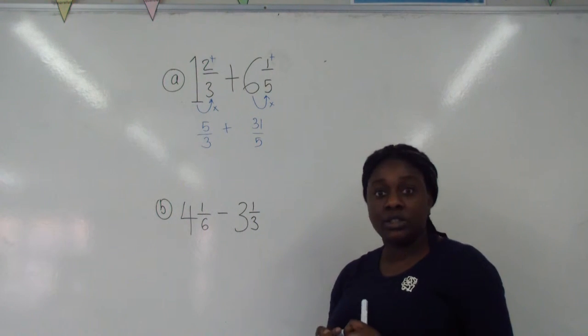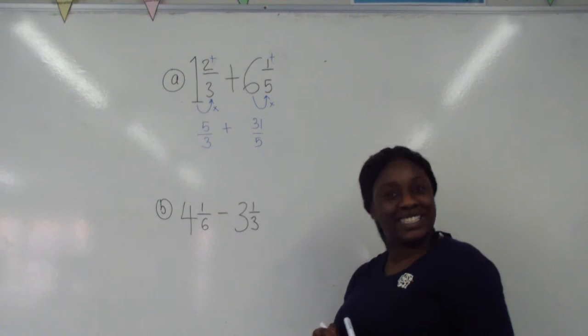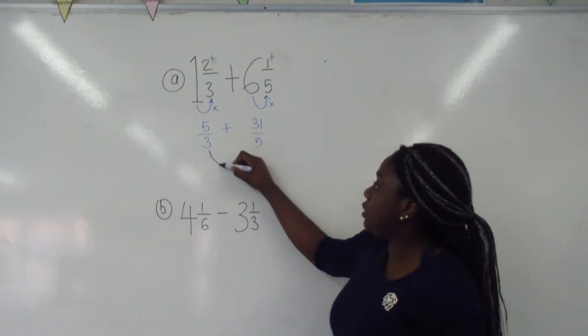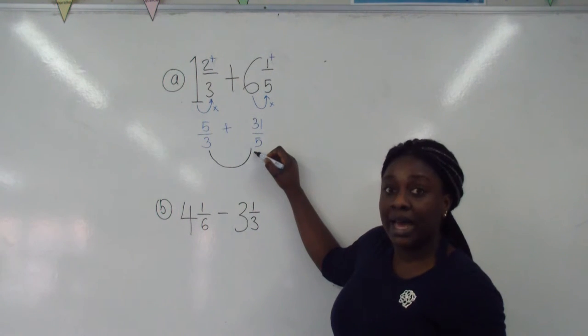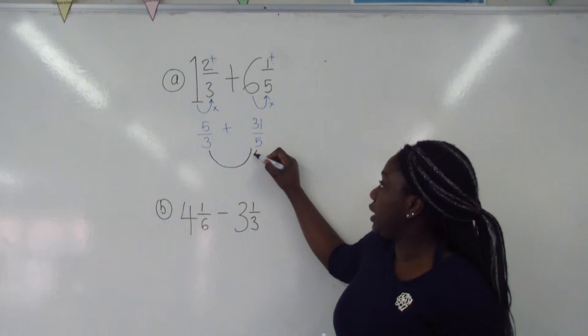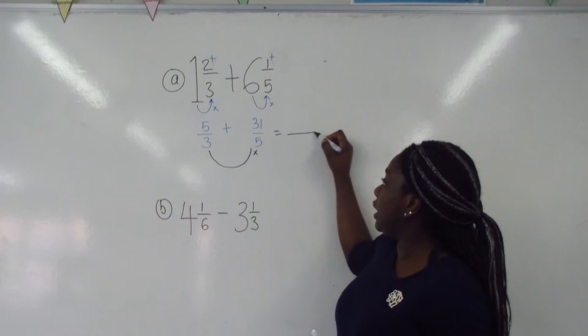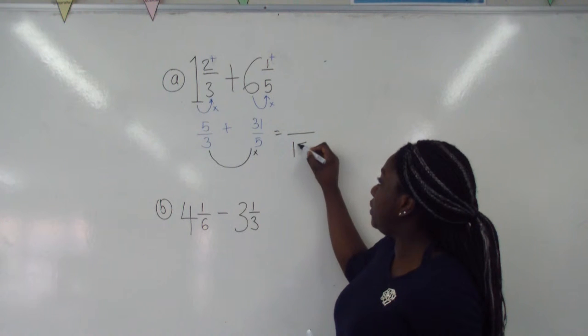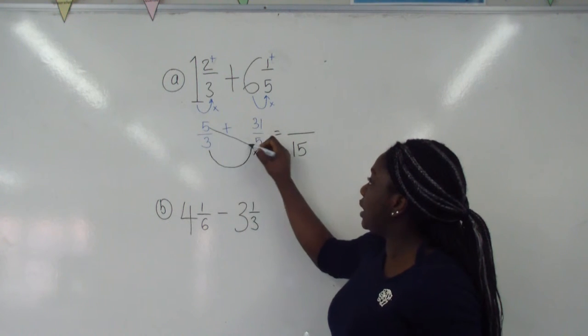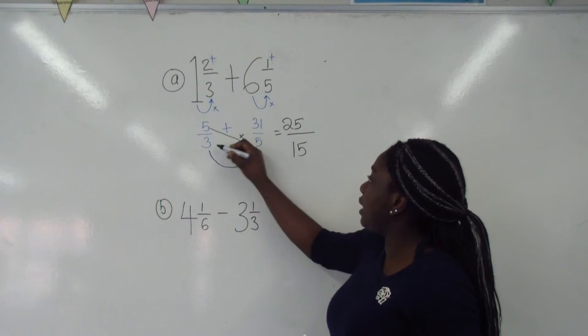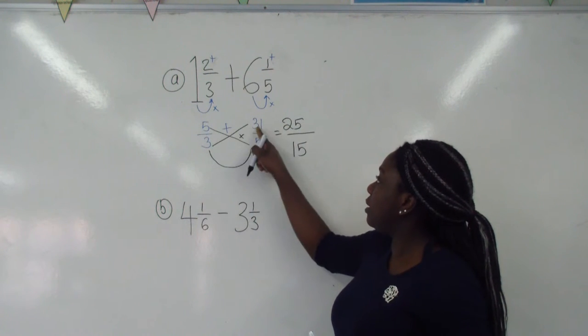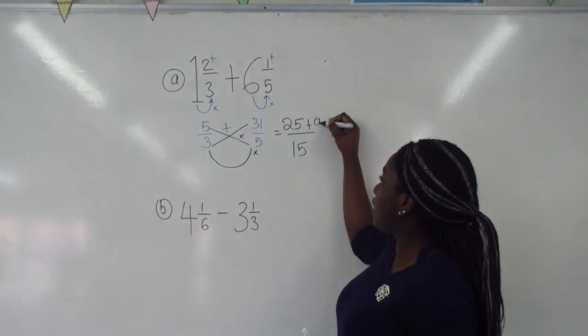So to add this kind of fractions, we need to use the smile and kiss method. So to get those two to smile, remember smile and kiss many times. So get these two to times, and you get three times five, which is 15. Get these two to kiss, five times five is 25. Get these two to kiss, three times 31, which is 93.